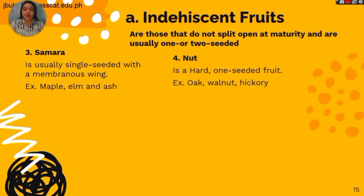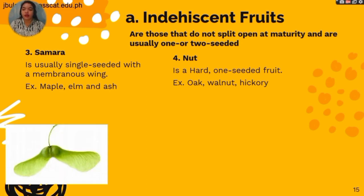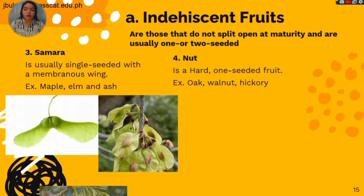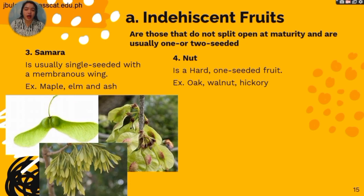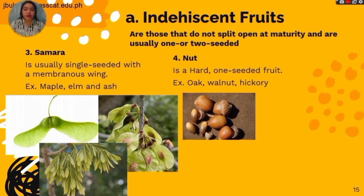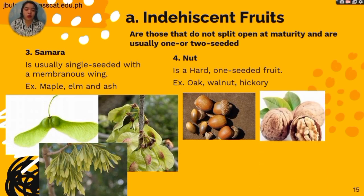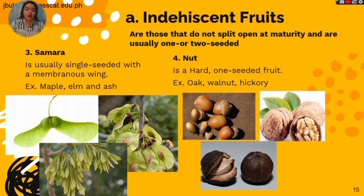The third indehiscent fruit is the samara, which is usually single-seeded with a membranous wing. Examples are maple, elm, and ash. The fourth indehiscent fruit is the nut, which is a hard, single-seeded fruit. Examples are oaks, walnut, and hickory.